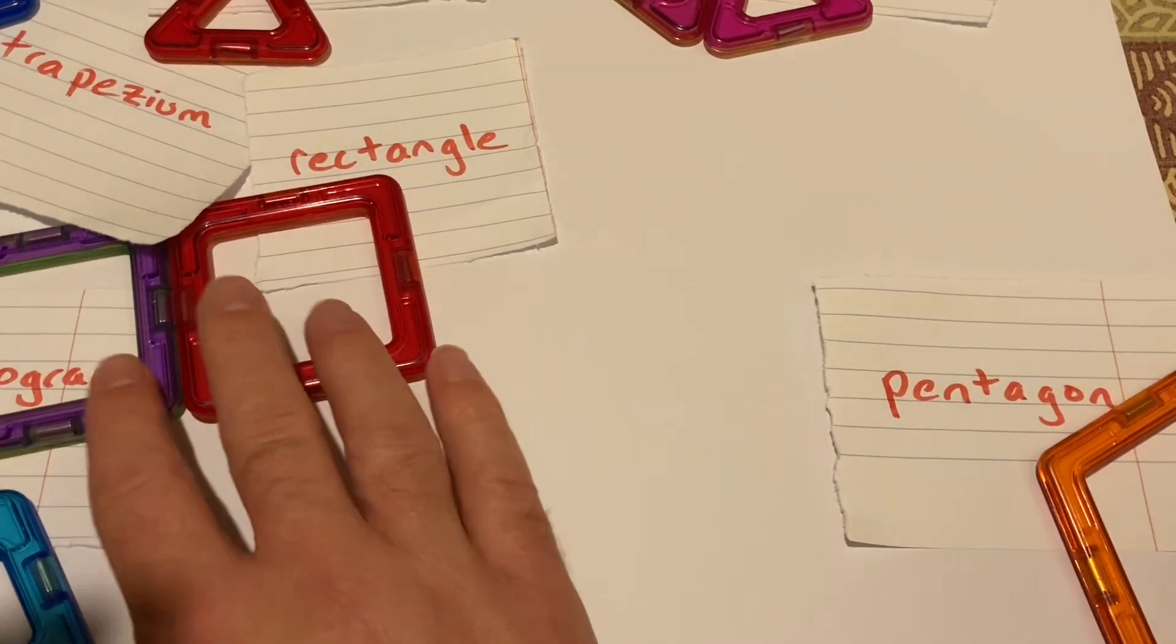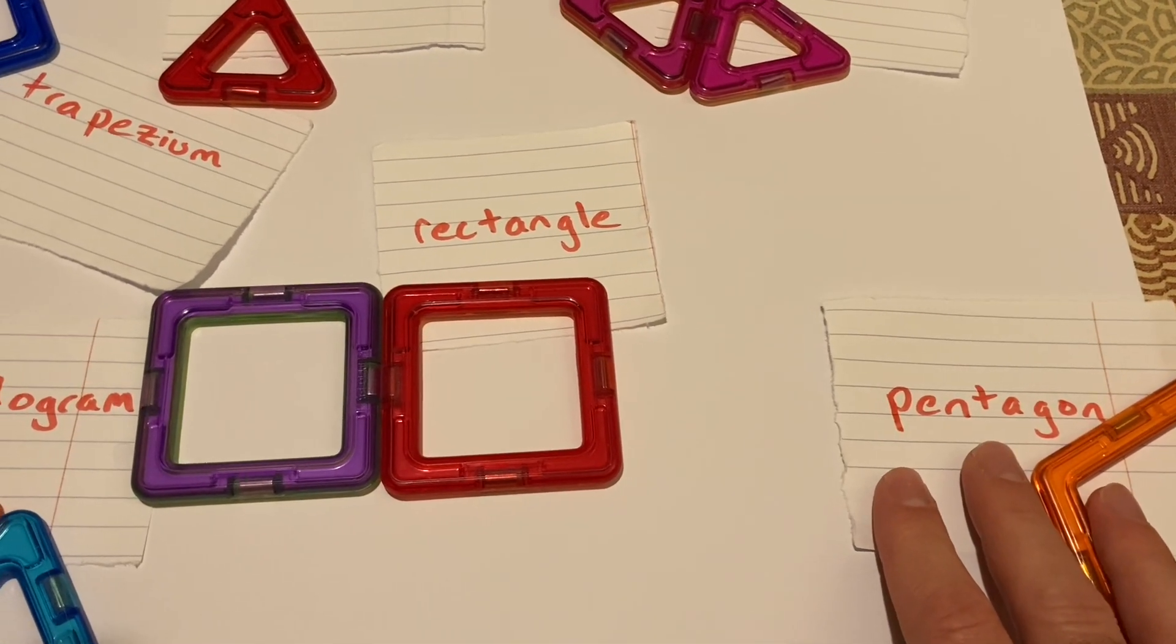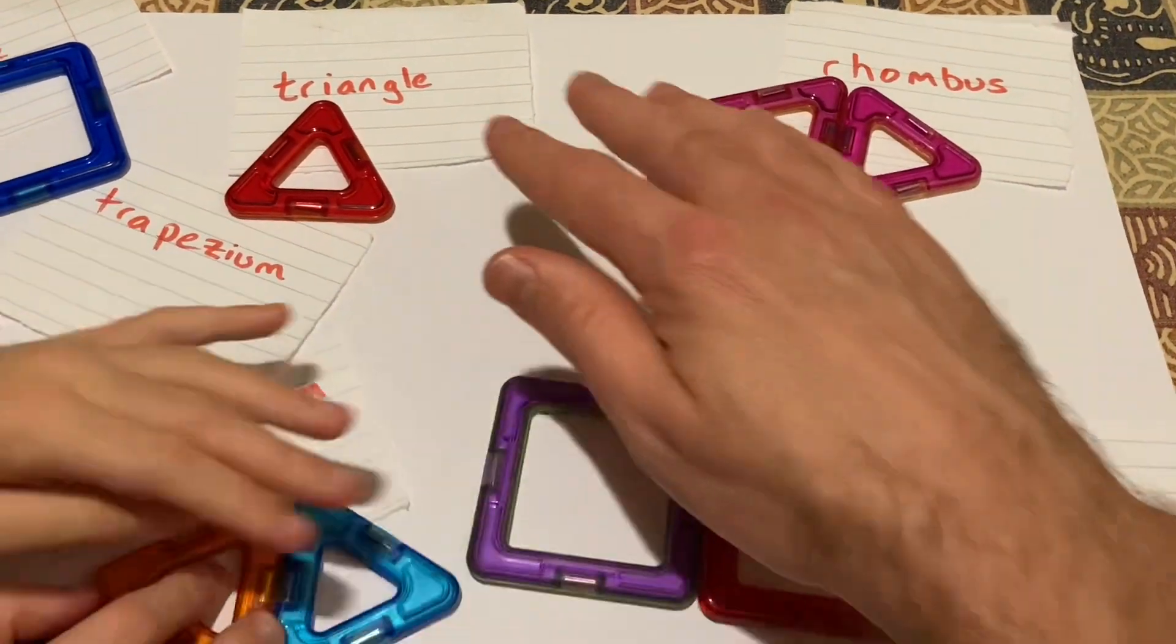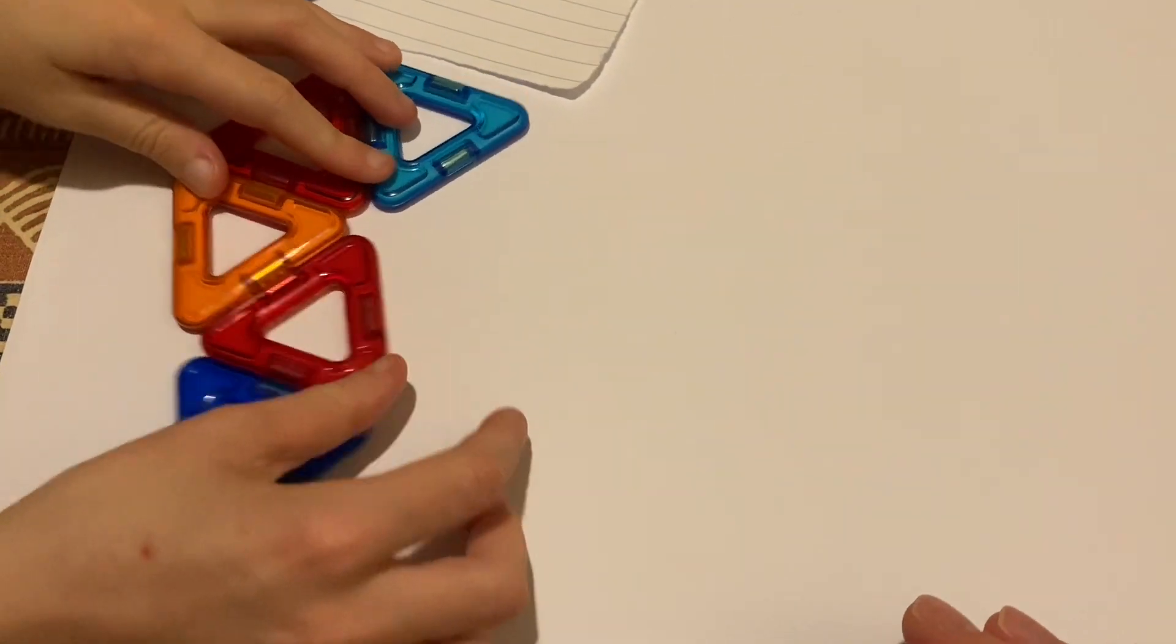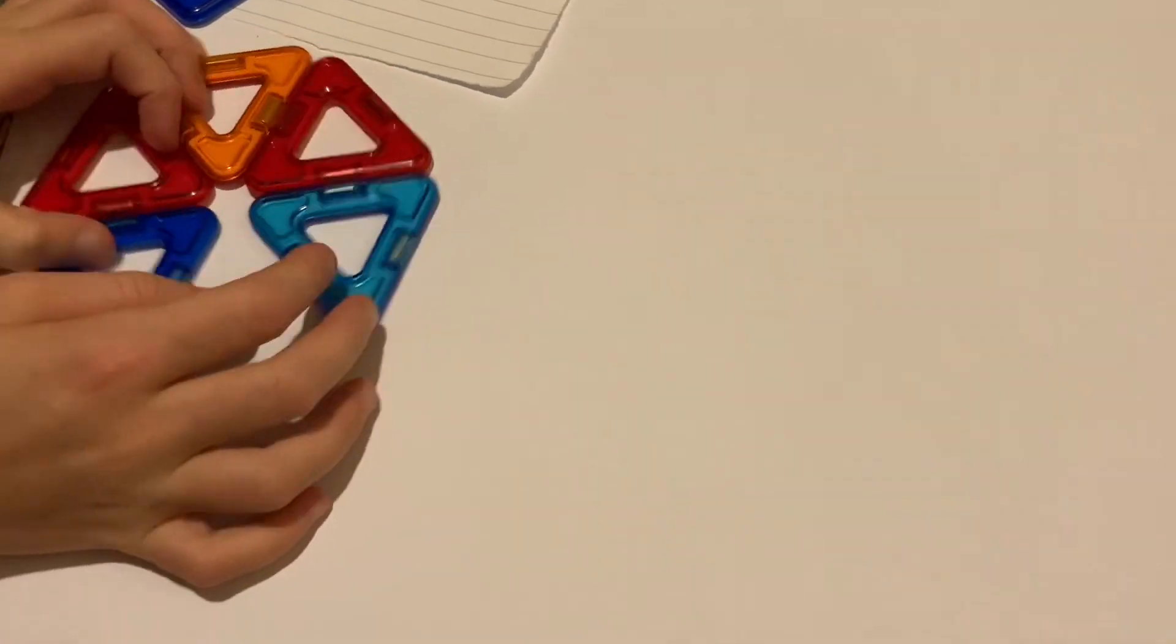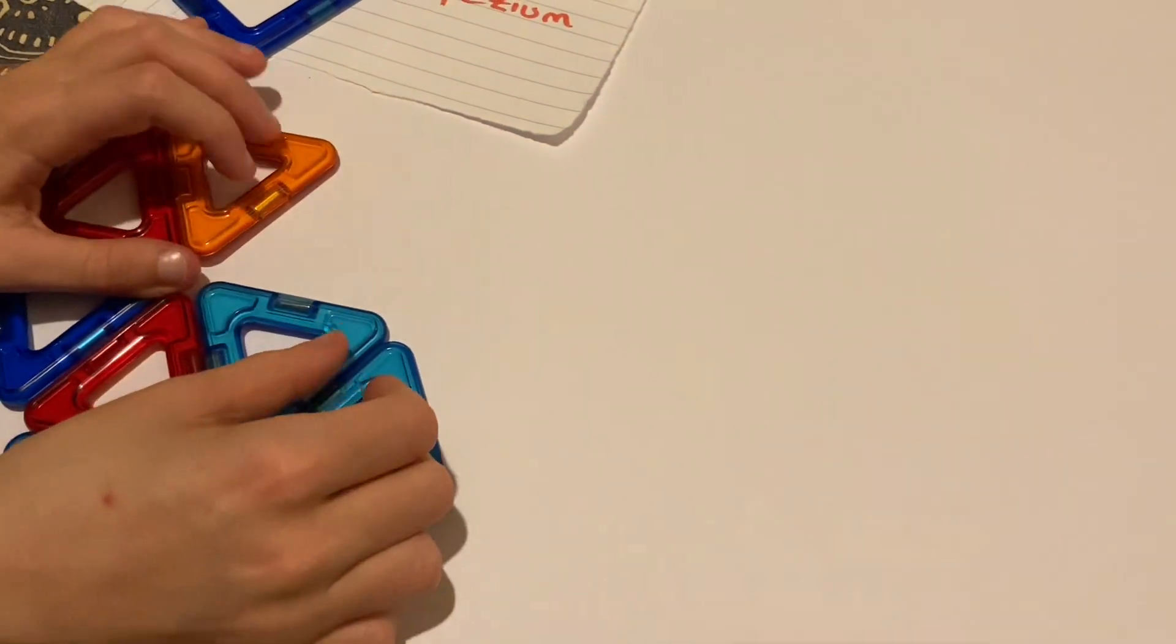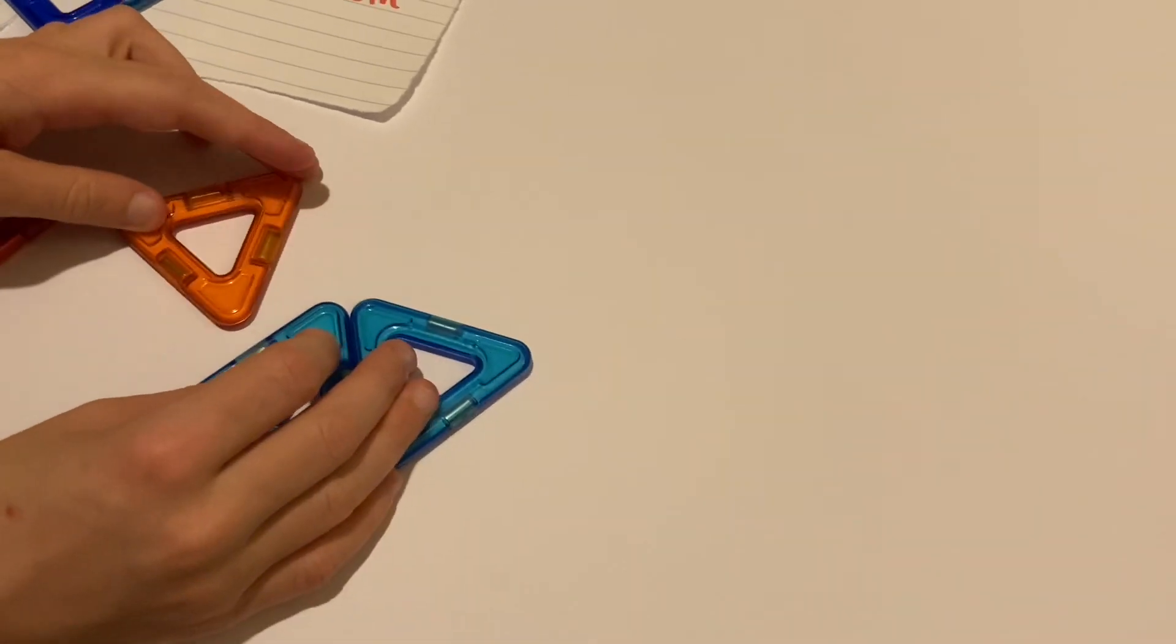There's something special about squares and triangles though. They tessellate! Absolutely. And what does tessellation mean? Tessellation means that like fitting into a hexagon, they fit with no gaps.